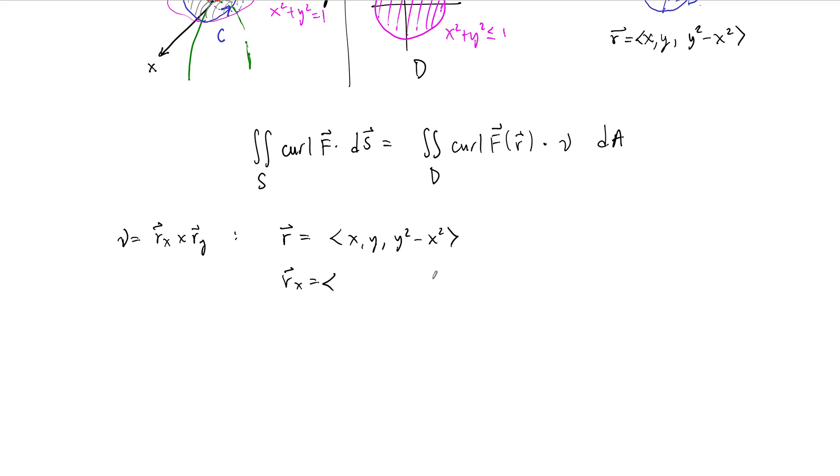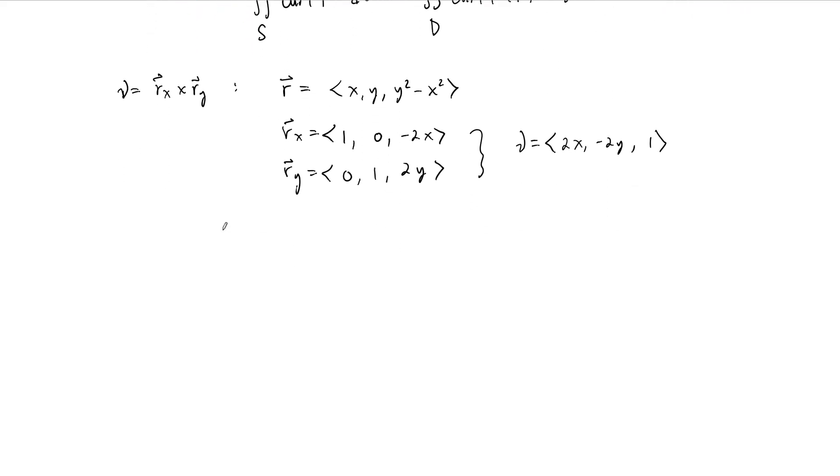So r sub x is the x derivative of this. It's going to be 1, 0, minus 2x. R sub y is the y derivative, 0, 1, positive 2y. And then we take the cross product to get our vector nu. And the vector nu is going to be 0 minus a negative 2x, so positive 2x. In the second component, 0 minus 2y, so negative 2y, and then 1. So this is exactly what our normal vector is.